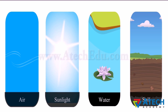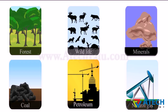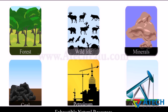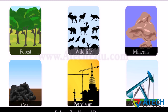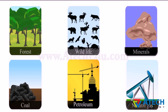Some natural resources like forests, wildlife, minerals, coal, petroleum, and natural gas are limited. With time, they can be exhausted by human activities. These are called exhaustible natural resources. These are non-renewable natural resources because they will not replace themselves on their own easily when consumed by humans.